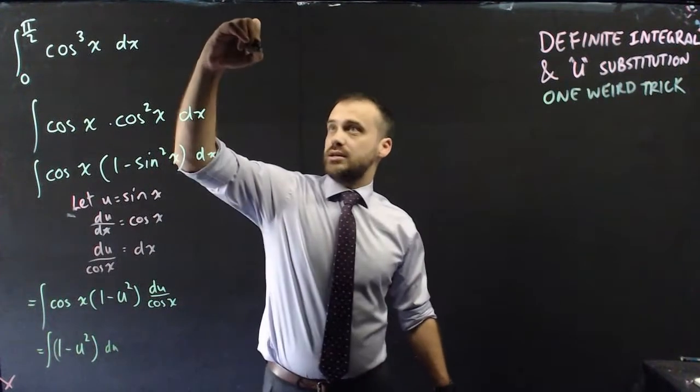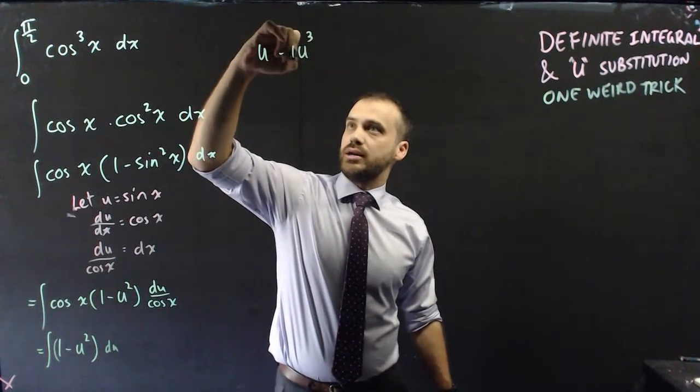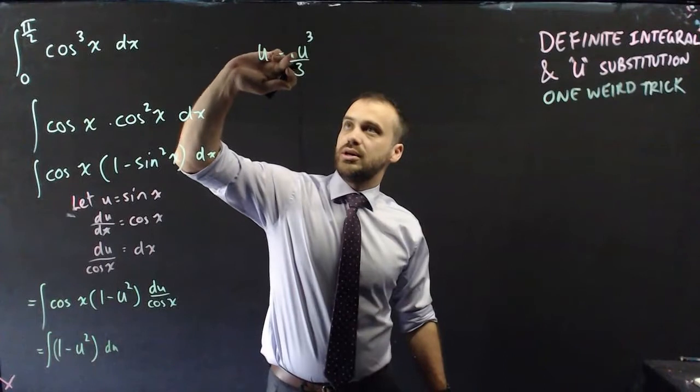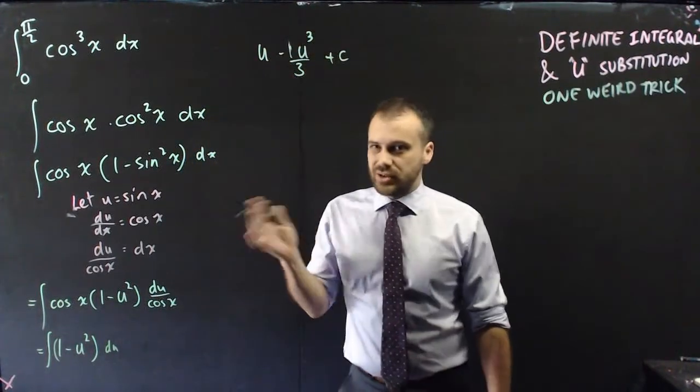Now the integral of that is going to be u minus, increase the power by 1, divide by the new power. So it should just be u cubed divided by 3, and then a little plus c on the end.